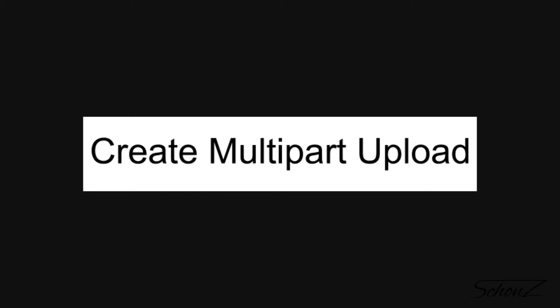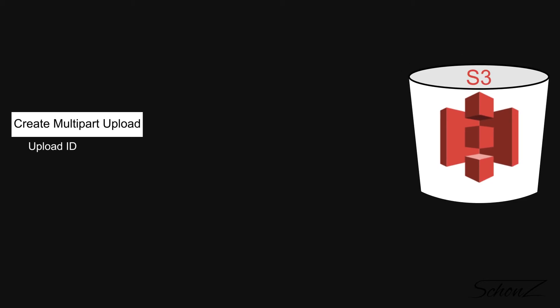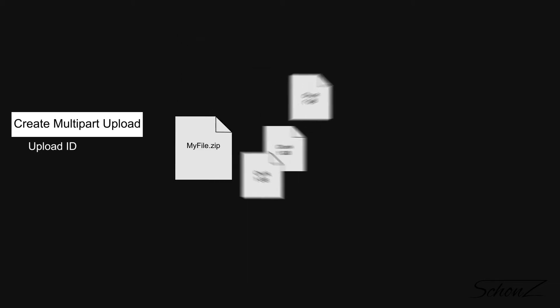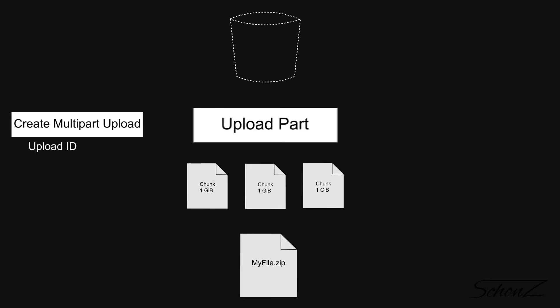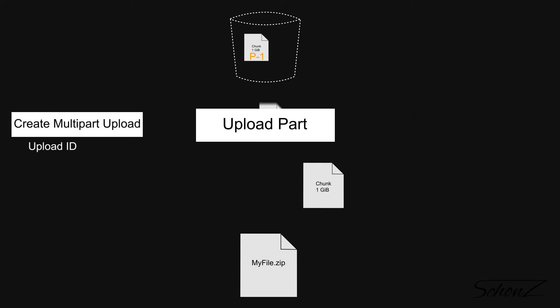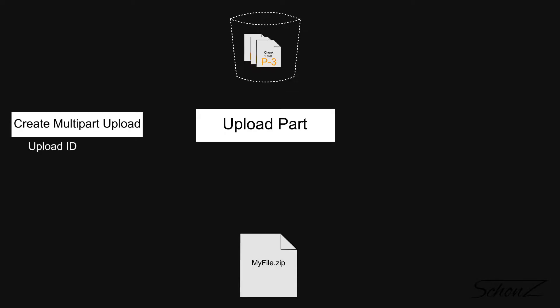First, we initiate the multipart upload by calling `create_multipart_upload`. This gives back an upload ID — think of it as an address to refer back to this multipart upload later. You won't see this file in S3 at all until you complete the upload at the very end. Next, I read a specified amount of each file at a time — one gibibyte in my case — write it into a new file I refer to as 'chunks', then upload each chunk specifying which part it is. This allows us to upload in whatever sequence we want and even retry sections if they fail, since uploading a part again just rewrites what was there. My code currently does everything in serial and doesn't have retries built in yet, so feel free to add that. Once all parts are uploaded, you call complete the upload, and the file appears in S3.